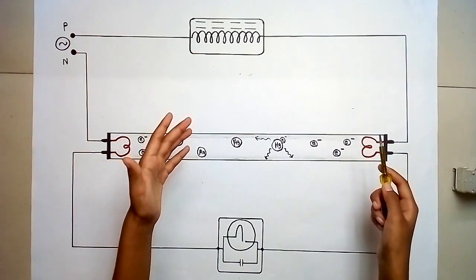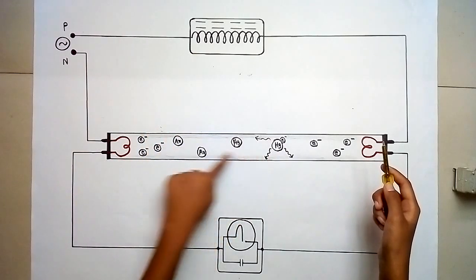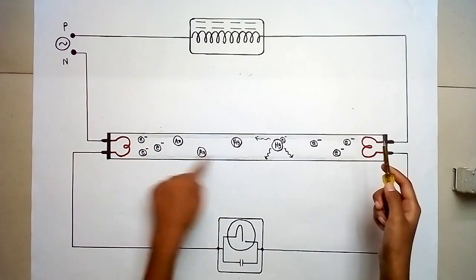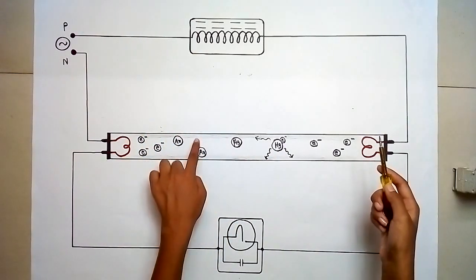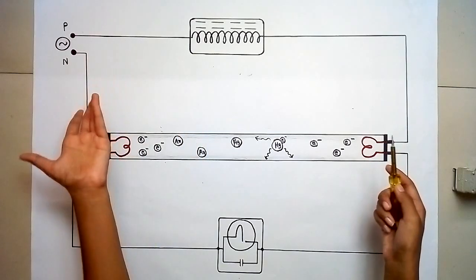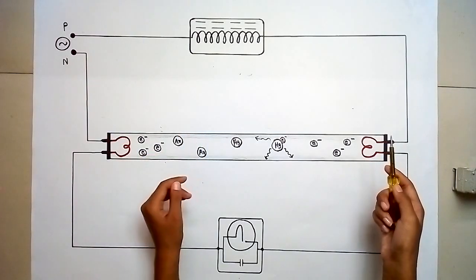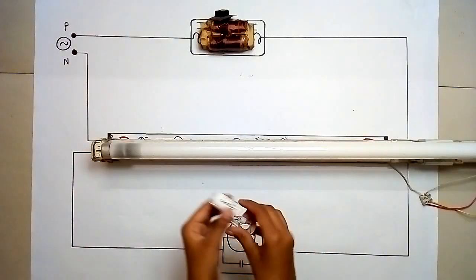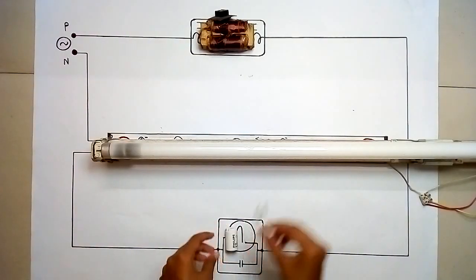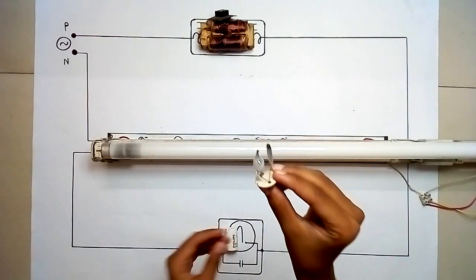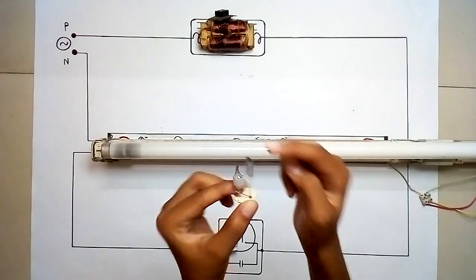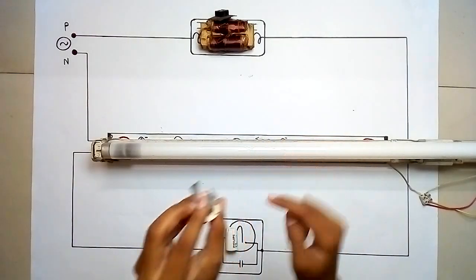This radiation strikes the phosphorescent or fluorescent coating inside the glass tube and is given out as visible light. Here we have an electronic component known as the starter, which consists of a capacitor and a bimetallic strip.